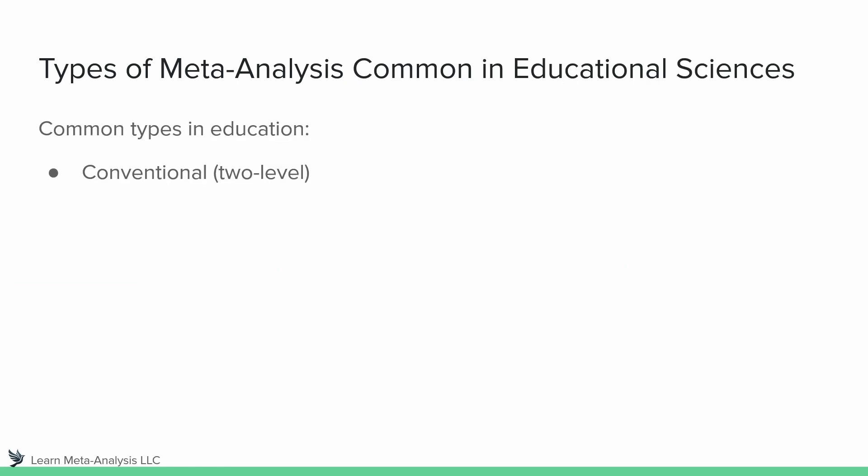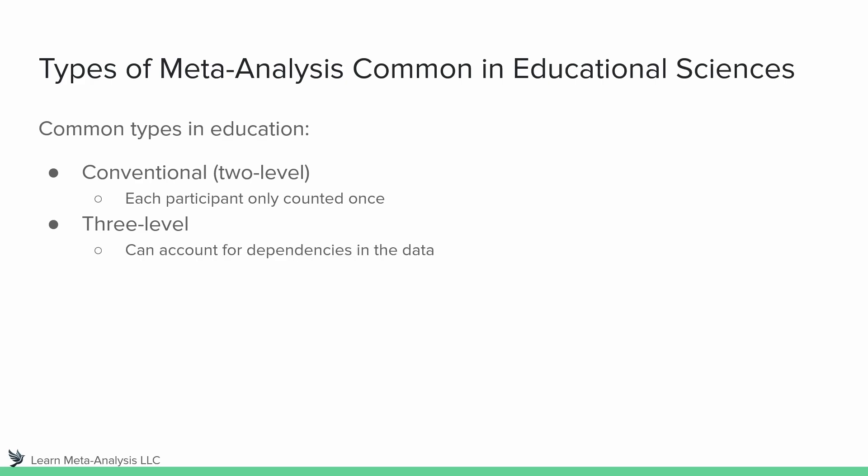Conventional meta-analysis, which is also a two-level analysis, is by far the most common as of now, but this is changing. One of the major things you need to know about conventional meta-analysis is that each participant should only be counted once. This is referred to as the principle of statistical independence, and it is very, very important. If you violate that, you violate the assumptions of the analysis. Three-level meta-analysis, on the other hand, can account for dependencies in the data, meaning you can have more than one effect size per study. With a conventional meta-analysis there tends to be one effect size per study; with three-level, you can have more.